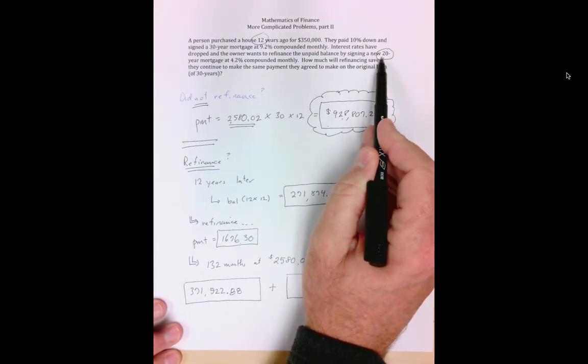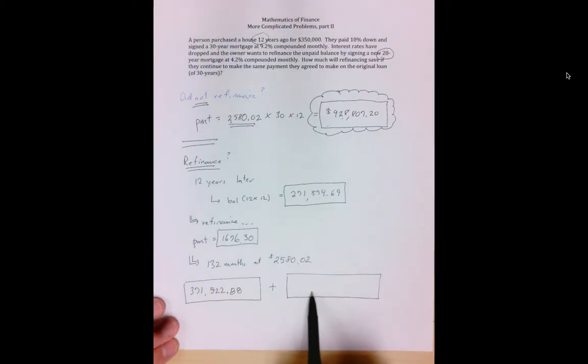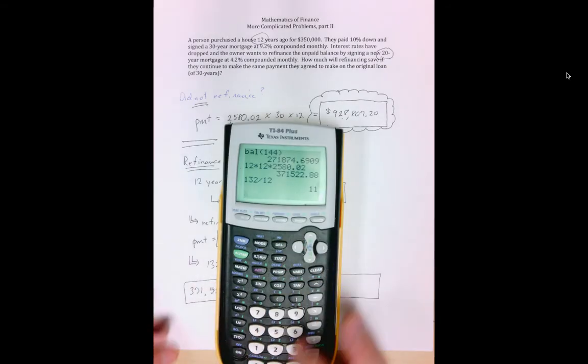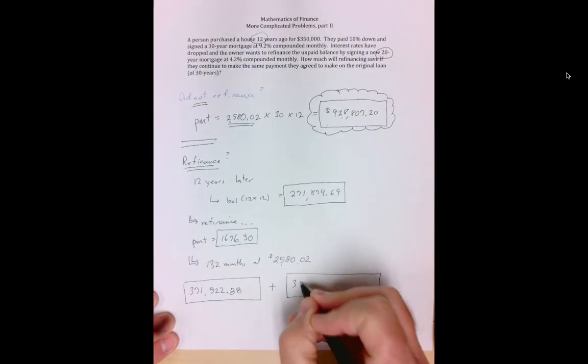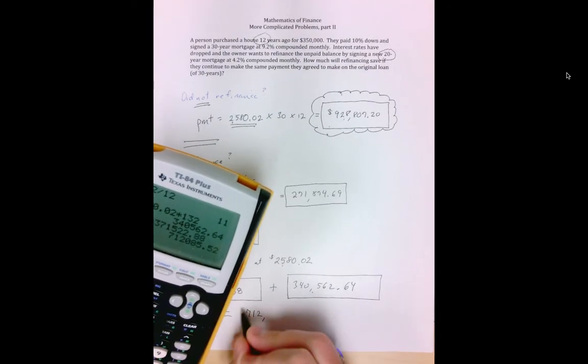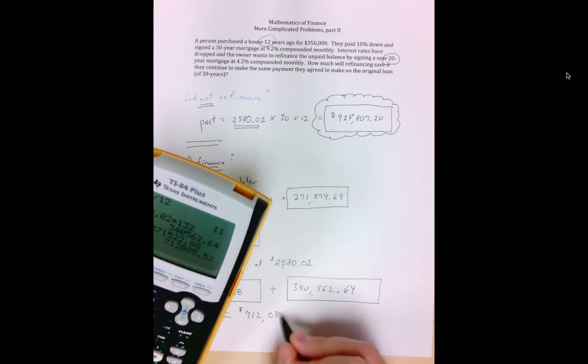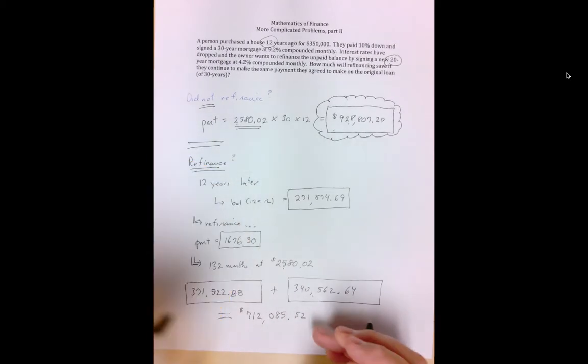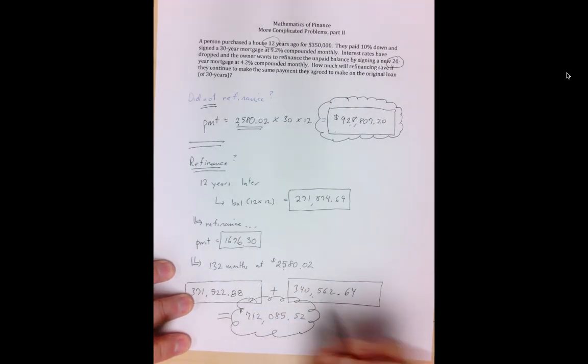It gets out to about 11 years to get our loan paid off. So refinancing, we're going to get this 20-year loan paid off nine years earlier. It's going to save you a bunch of money. So how much are we going to pay on this new loan? Well, we're going to pay $2,580 times 132 months. So we're going to pay $340,562.64. Well guys, if we add those two together, we've got our answer. Well, we've almost got our answer. We want to talk about how much we would save. So in this situation, we would pay the bank a total of $712,085.52. I'm going to put a big squiggly around it just to match what I did up here.